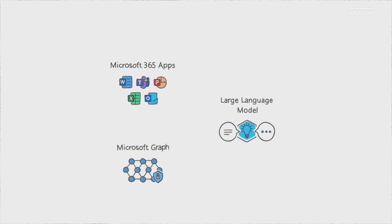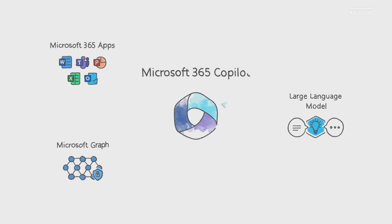It harnesses the power of three foundational technologies: the Microsoft 365 apps — that's Word, Excel, PowerPoint, Outlook, Teams, and more; the Microsoft Graph, that's all your content and context — your emails, files, meetings, chats, and calendar; and a large language model, or LLM, a creative engine capable of parsing and producing human-readable text, all accessible through natural language.